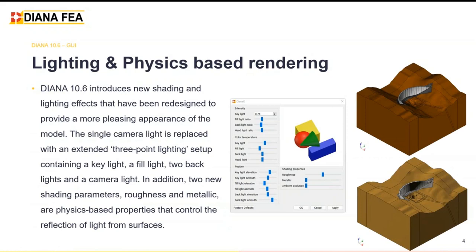We'll start showing our new improvements with lighting and physical rendering. In the past, Diana had only one source of light, but now we have three different light sources that illuminate the model from three different points to enhance features such as valleys, mountains, and corners. The user can modify the light sources, adding more shadow or more light. In addition, the user can take advantage of physics-based rendering to make the model more realistic by making surfaces more rough or more metallic.